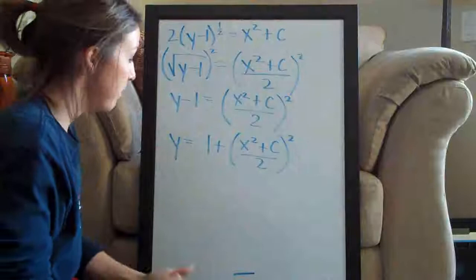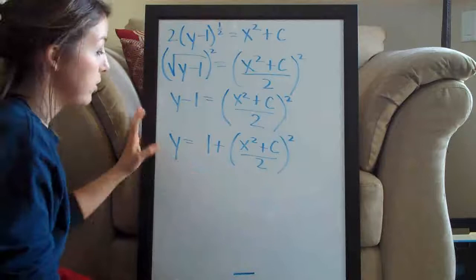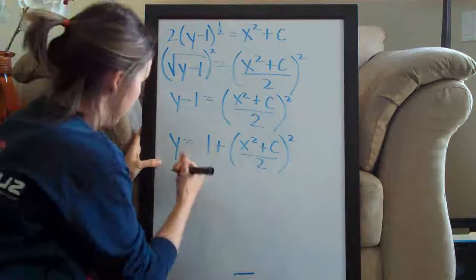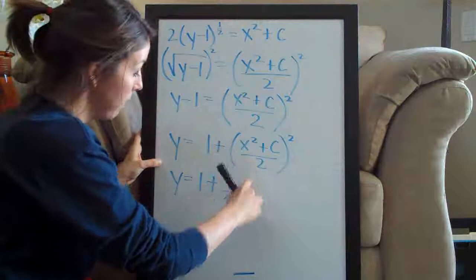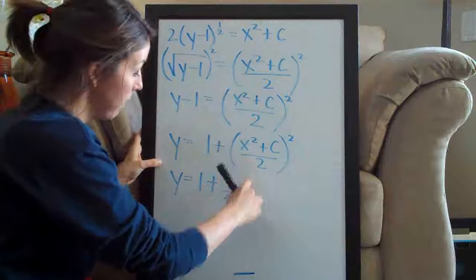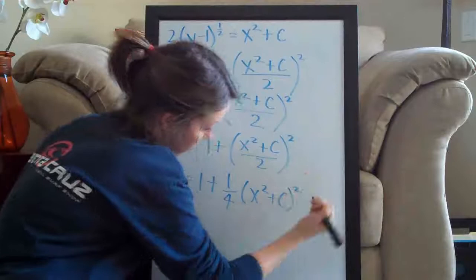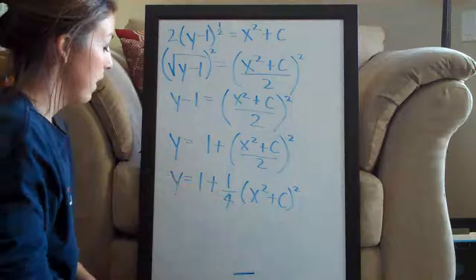You could leave the answer just like that and it would suffice as a final answer. If you'd like to simplify further, since we have a 2 in the denominator that's being squared, we can write y equals 1 plus one fourth times the quantity x squared plus c, all squared. Both forms are equivalent and either one will work as an answer on your homework or your test. That's your final answer.